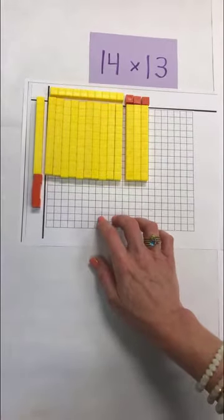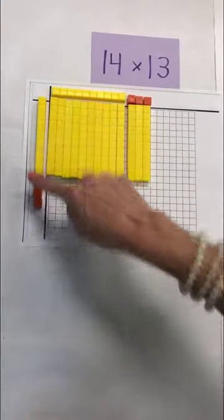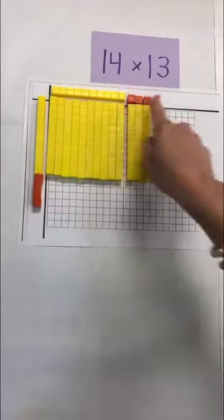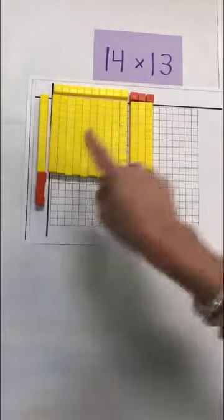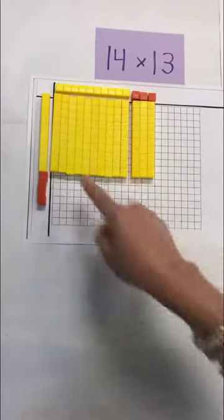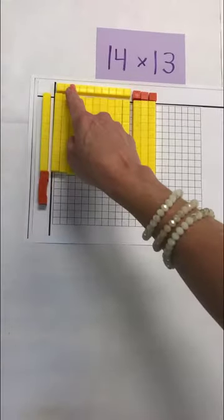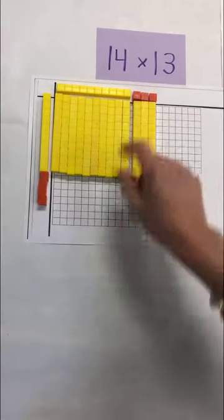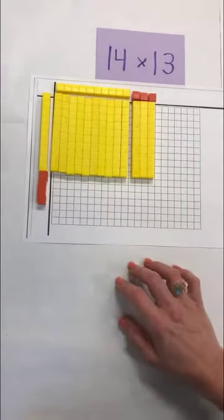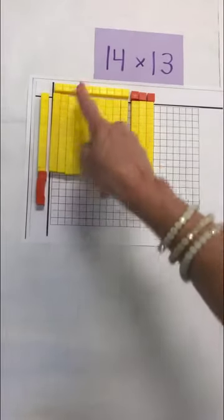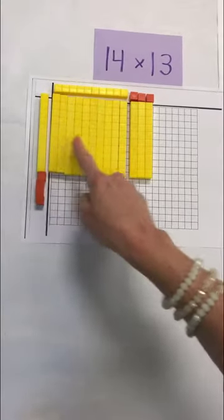Alright so let's take a look at what we have here. On the side and at the top are our factors and in the middle we're creating our product. So we have 14 groups of 13. So when we're multiplying we're thinking first what is 10 times 10? 10 times 10 is 100.